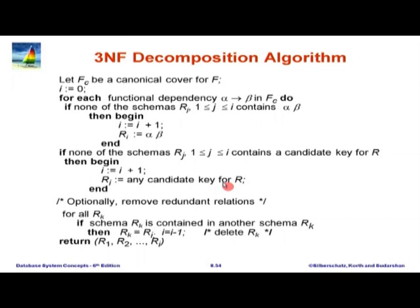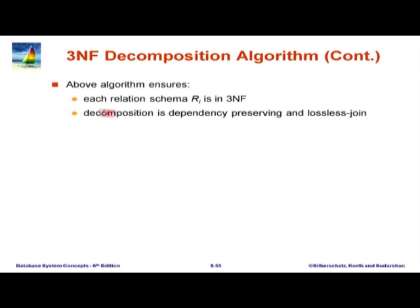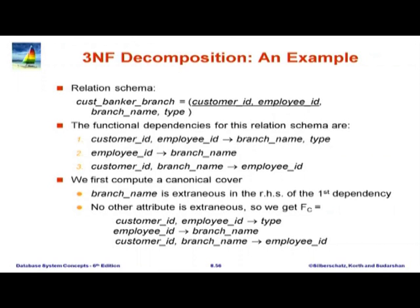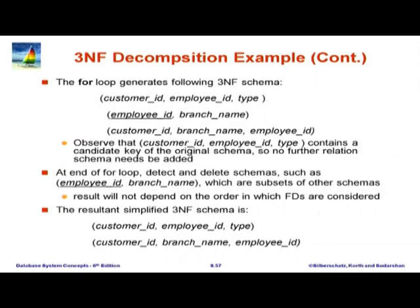What do we get from all this? Every relation generated is in 3NF, it is dependency preserving, and it is lossless join. All of this can be shown — it is not too hard to prove. It is in the book or in supplementary material on the web. There is another example involving customer ID, branch name, employee ID, and type, but for lack of time we will not go into it.